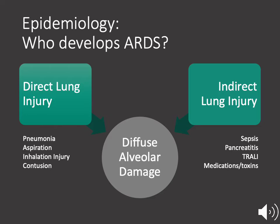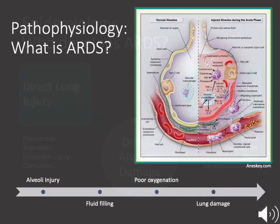The common pathologic feature is diffuse alveolar damage. Lung injury and diffuse alveolar damage lead to vascular permeability and protein-rich edema fluid that fills the alveoli and interstitial space. This then leads to impaired gas exchange and hypoxemia.